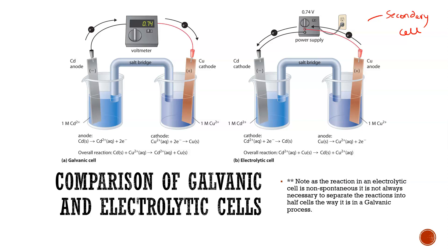In this cadmium-copper cell, cadmium solid goes to Cd²⁺ and copper is being reduced — copper is our cathode, cadmium is oxidized so it is the anode. During galvanic discharge, electrons flow through the voltmeter from anode to cathode. In the electrolytic cell we apply power greater than the voltage given out by the original cell — in order for the reverse electrolysis reaction to occur, the applied voltage must exceed the voltage produced during discharge.